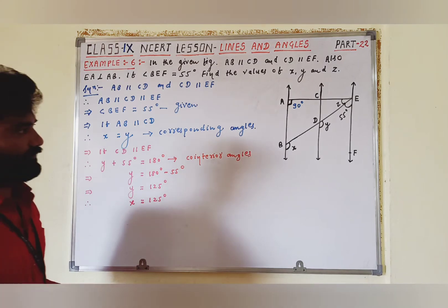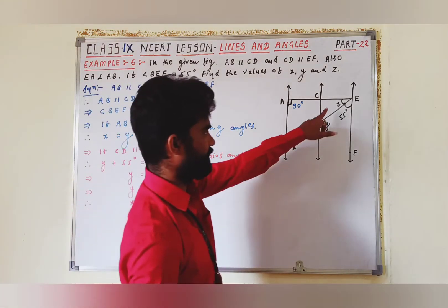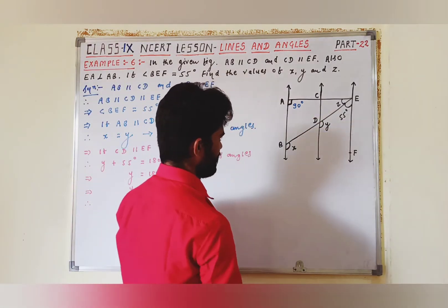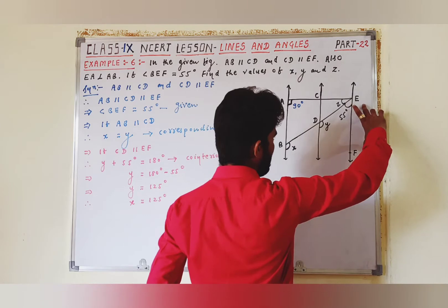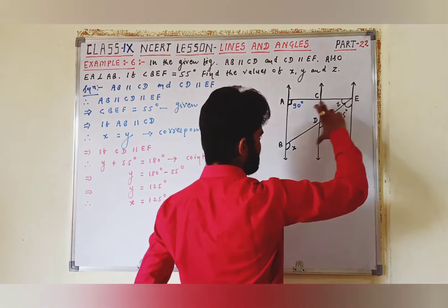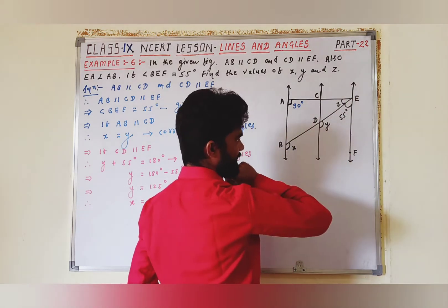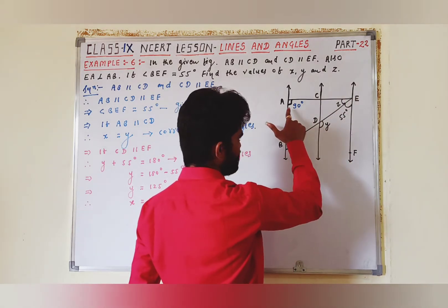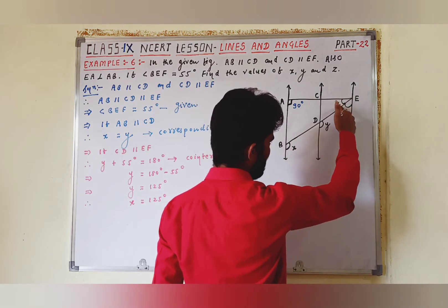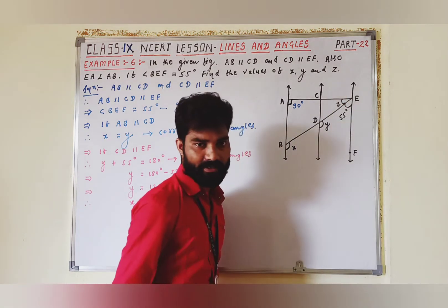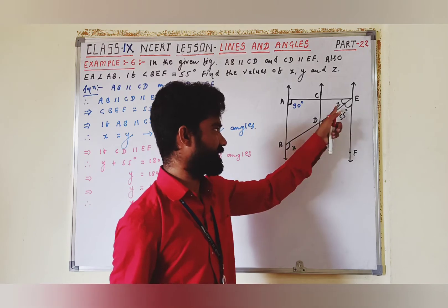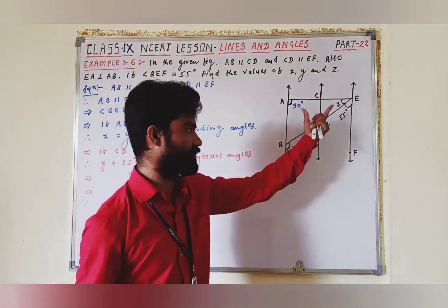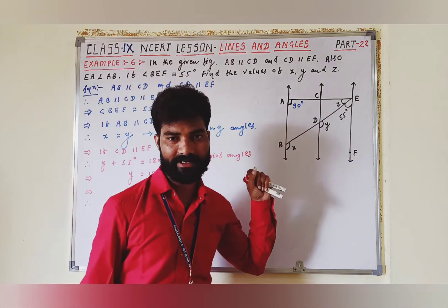Now, अब Z find out करना है। देखो जहाँ angle A और angle E हैं — AB and EF parallel हैं। तो angle A और angle E — यह co-interior angles होंगे। और co-interior angles का addition 180 degree रहता है।